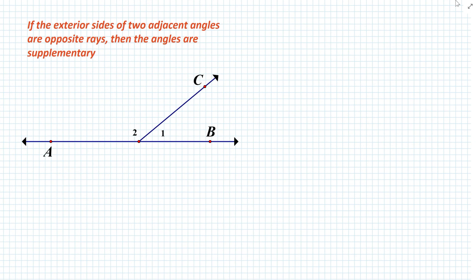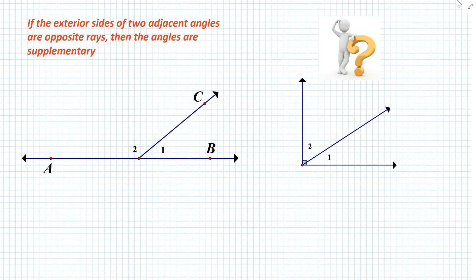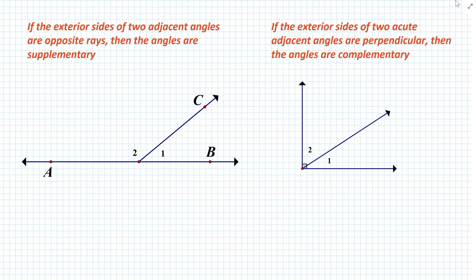Notice that in today's lesson we have introduced a new theorem: if the exterior sides of two adjacent angles are opposite rays, then the angles are supplementary. The question arises: is there a similar theorem for when the angles are complementary, or basically when the exterior sides are not opposite rays but perpendicular rays? The answer is yes. The theorem goes: if the exterior sides of two acute adjacent angles are perpendicular, then the angles are complementary. Here we're referring to these exterior sides of the two adjacent angles.